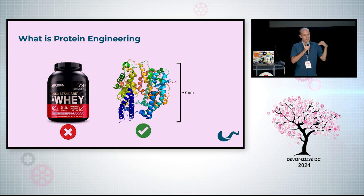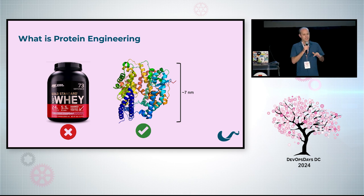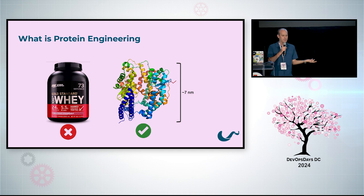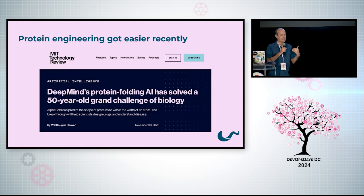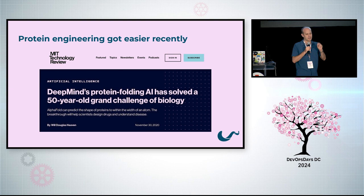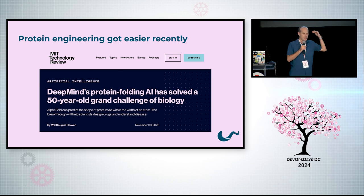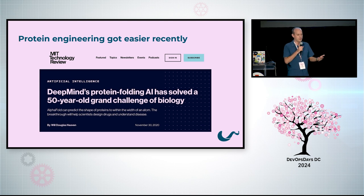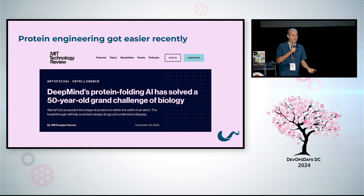The thing about protein engineering is that it's been something people have been trying to do for a really long time, going back decades. And up until really recently — like the past five or ten years — it's been basically incredibly difficult. Until all these AI tools came around, probably the most well-known of them being AlphaFold 2, which came out of Google DeepMind.